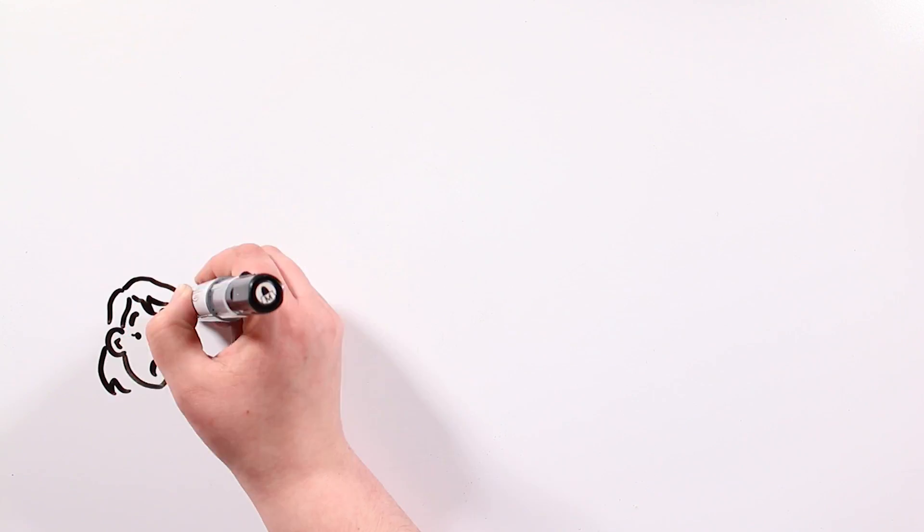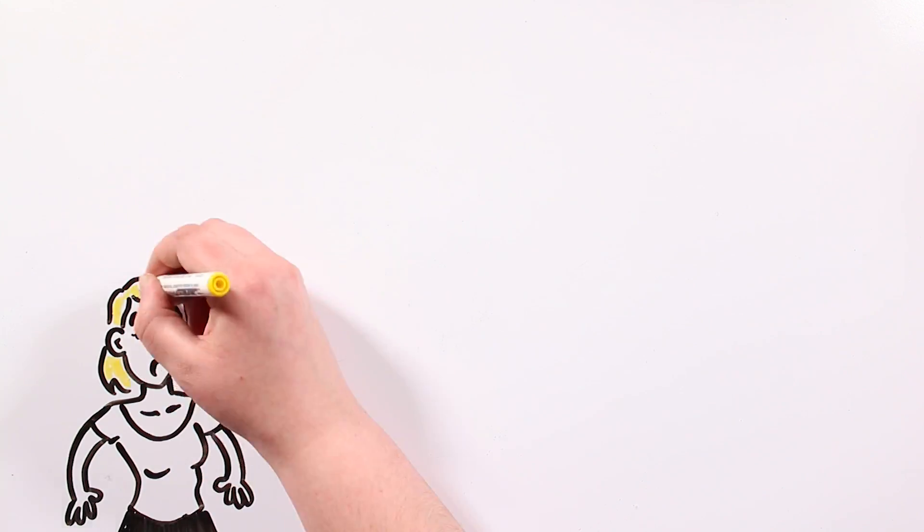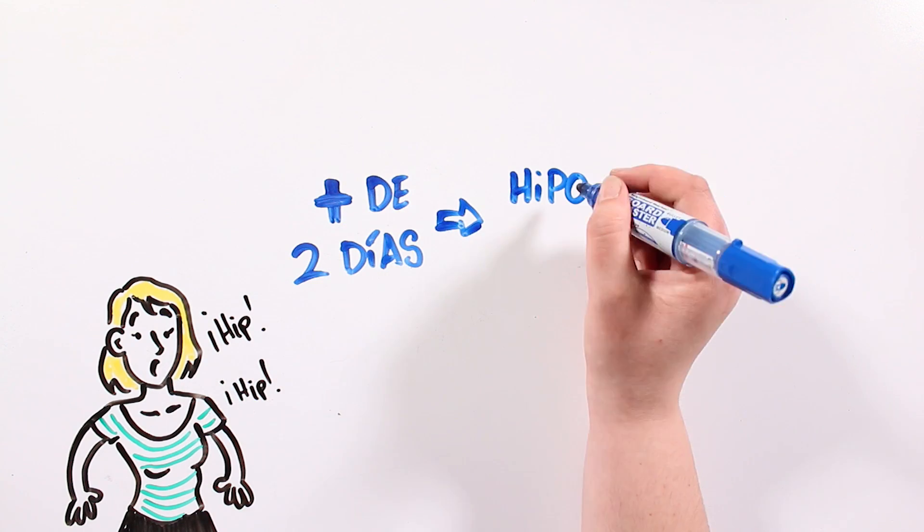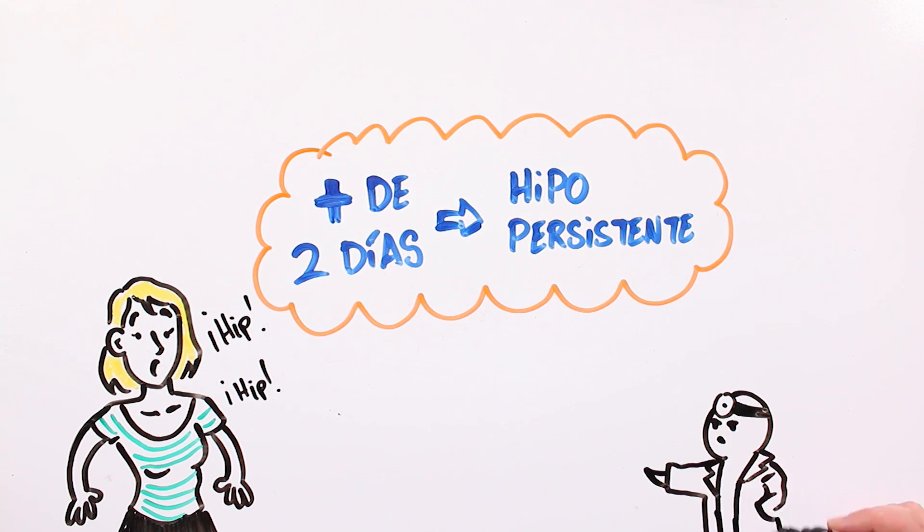The average length of a temporary hiccup attack goes all the way from 7 minutes to a couple of hours. When it lasts for more than 2 days, it is called persistent hiccups, and you gotta go see a doctor.